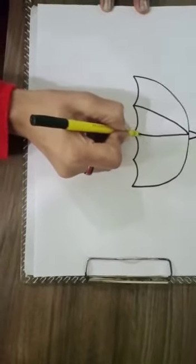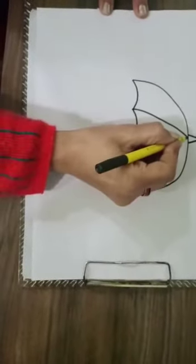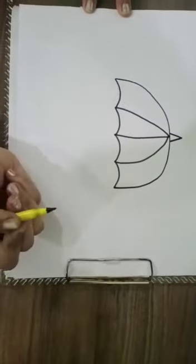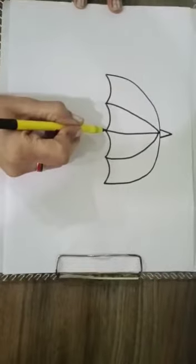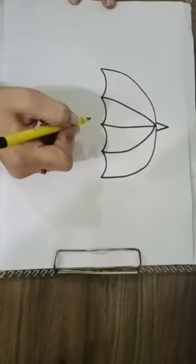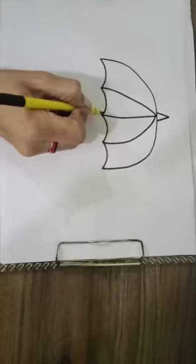And then this line will be straight and this a bit curved line, okay? And from this center of the umbrella we will make the handle or the stick of the umbrella. One straight line, one straight line, another straight line, okay?